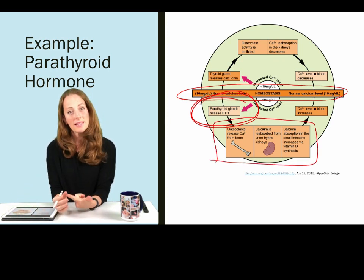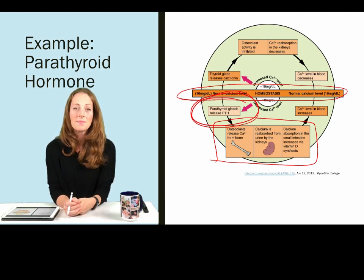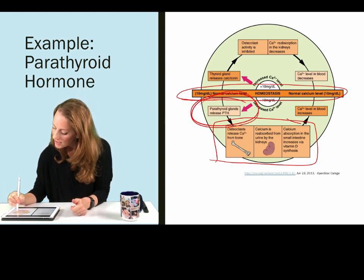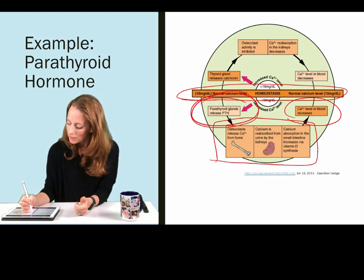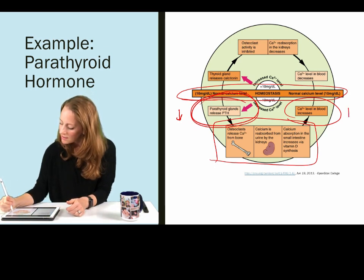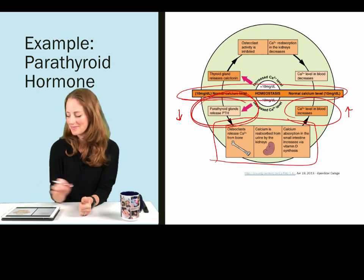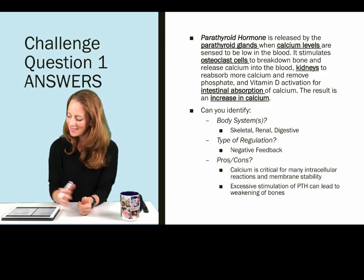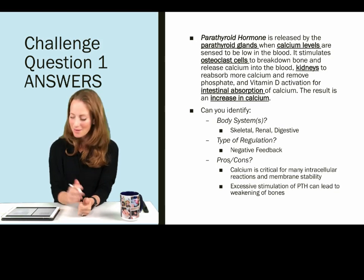That will cause those three changes we just talked about: osteoclast, kidney, and intestinal changes. Overall, those three changes combined lead to an increase in calcium levels in the blood. We saw that calcium was too low, and the response was for calcium to increase. If you said negative feedback control, you are correct.